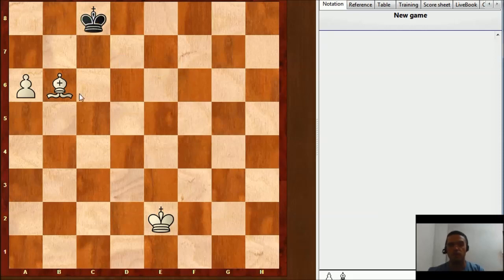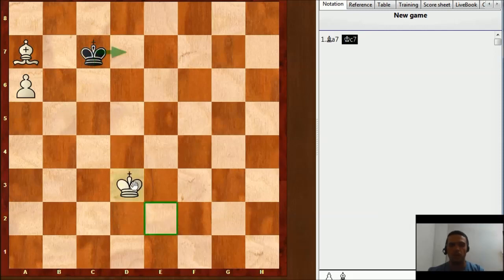So, the first move is going to be bishop a7. Of course, black king may try to come over here right now. That's a good plan. But we can bring our king, king d3,